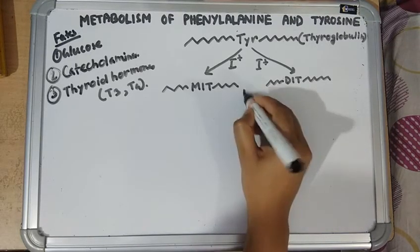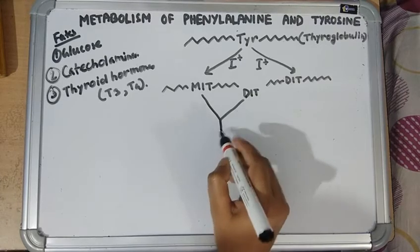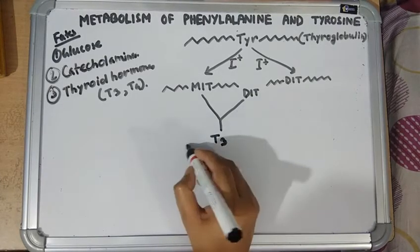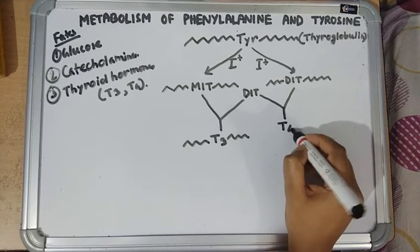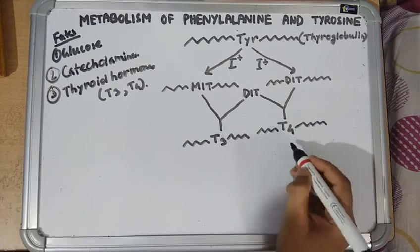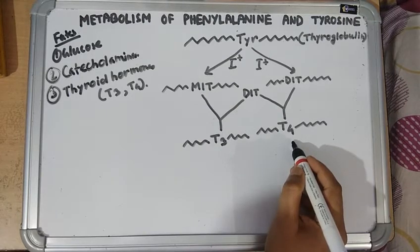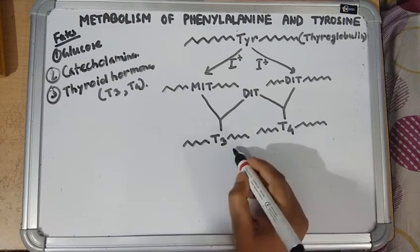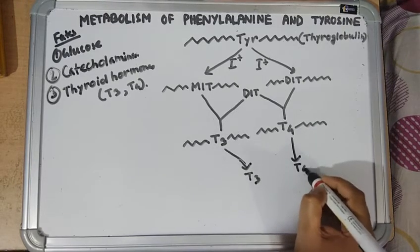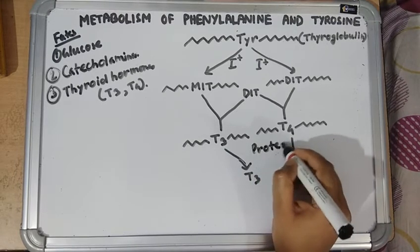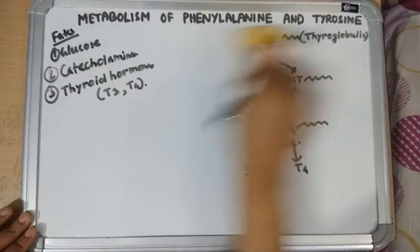Then there is coupling, where MIT and DIT (monoiodotyrosine and diiodotyrosine) combine to form triiodothyronine (T3), and DIT and DIT combine to form tetraiodothyronine or thyroxine (T4). T3 and T4, when part of thyroglobulin, can be stored. When needed, they are released by proteolysis using protease enzymes from thyroglobulin. This is how thyroid hormones are synthesized from tyrosine.